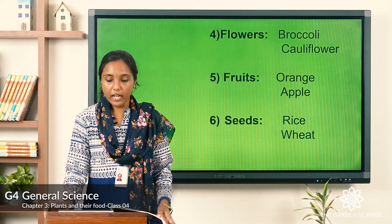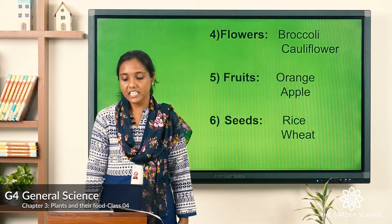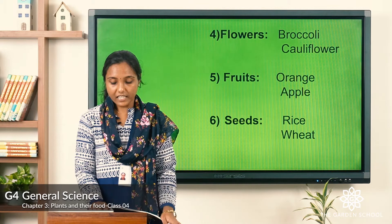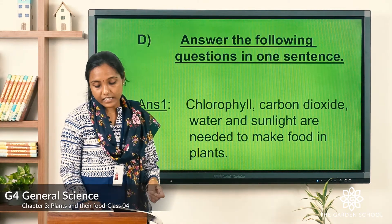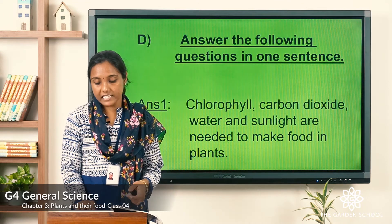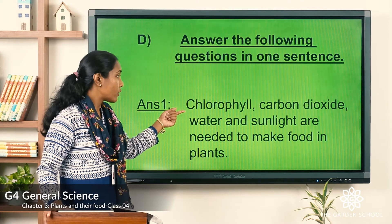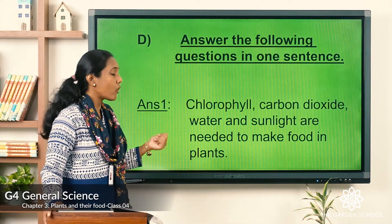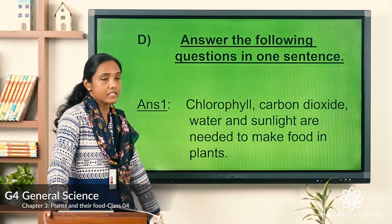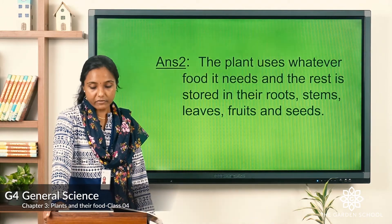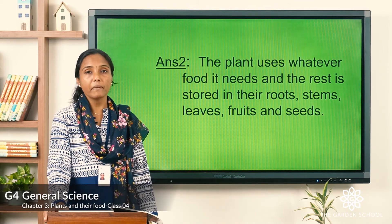Now let's move to exercise four: answer the following questions in one sentence. Question one: list the factors that plants need to make food. Answer: chlorophyll, carbon dioxide, water, and sunlight are needed to make food in plants.